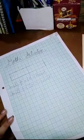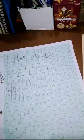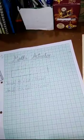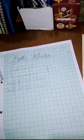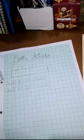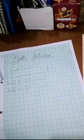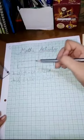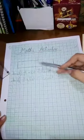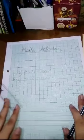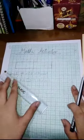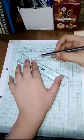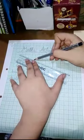Our next question is: draw two straight lines in this rectangle to divide it into one rectangle and two equal triangles. I have already divided it into two equal rectangles, and now to get two smaller triangles, we will draw a line like this.